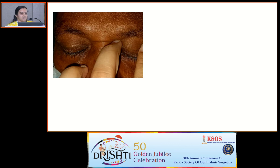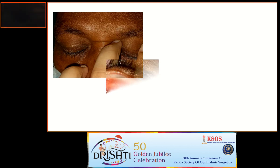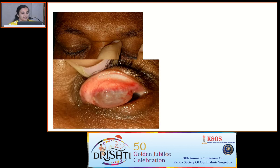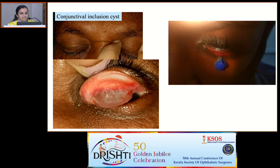This elderly gentleman had a long-standing history of painless swelling, firm in consistency — a vascular swelling was expected — but on eversion, it was a simple conjunctival inclusion cyst, which needs simple marsupialization even without imaging. And this is a child treated as chalazion, but on eversion, it was a foreign body.